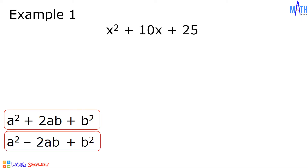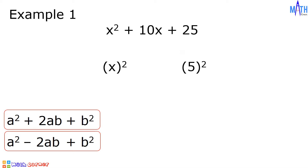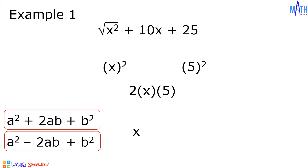Example number 1: let us factor x squared plus 10x plus 25. It must be of the form a squared plus 2ab plus b squared. Since x squared can be written as the square of x, and 25 can be written as the square of 5, then a equals x and b equals 5. And 2ab, or 2 times x times 5, is equal to 10x. Therefore, x squared plus 10x plus 25 is a perfect square trinomial. The square root of x squared is x and the square root of 25 is 5, so we have the square of x plus 5.